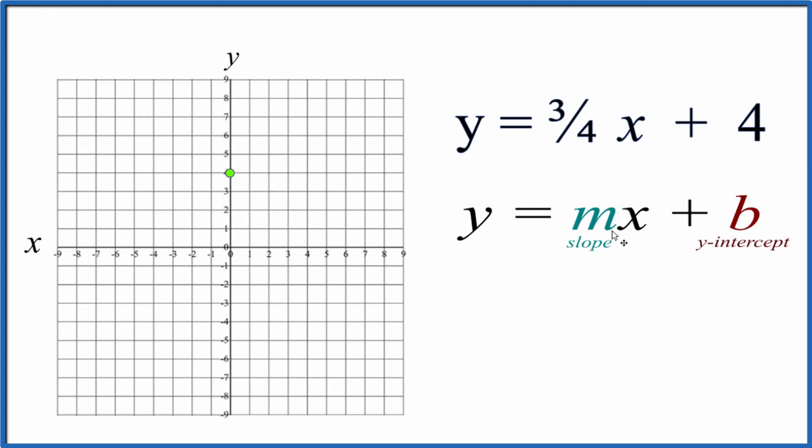Next, we're going to look at slope. Slope is m, three-fourths. So what that tells us is we can think of this three-fourths as rise over run.